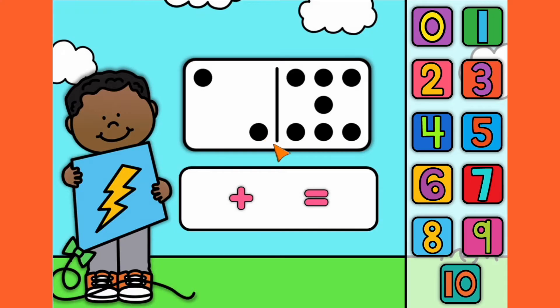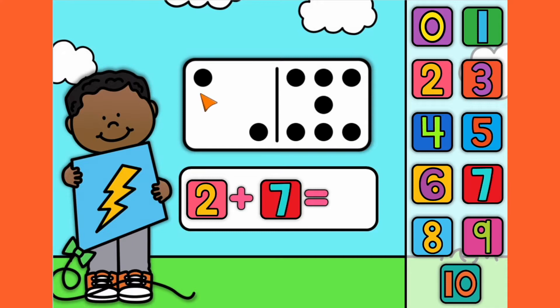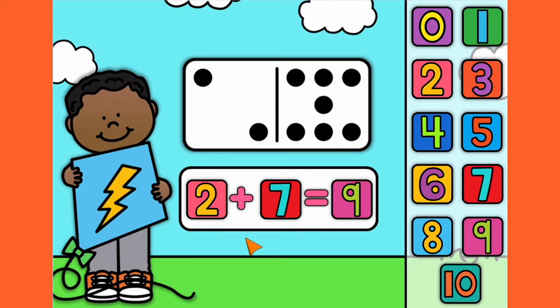Number 2. 1, 2. 1, 2, 3, 4, 5, 6, 7. Let's count them all together. 1, 2, 3, 4, 5, 6, 7, 8, 9. 2 plus 7 equals 9.